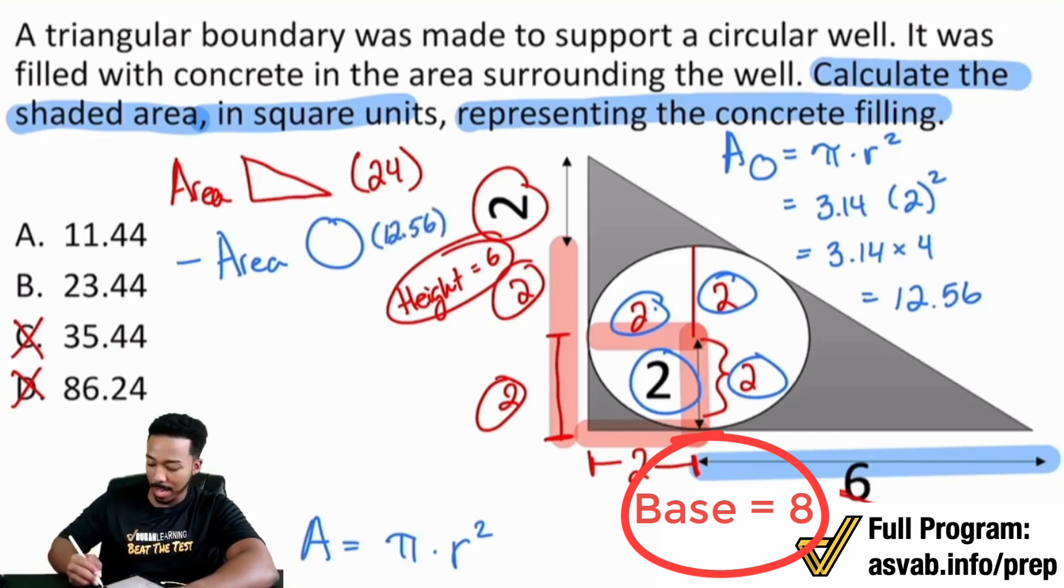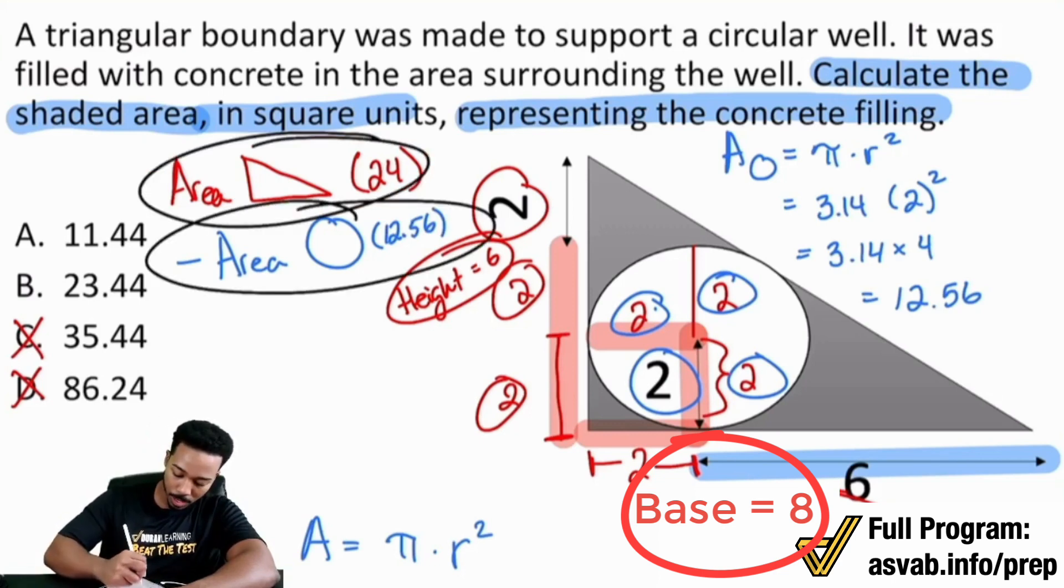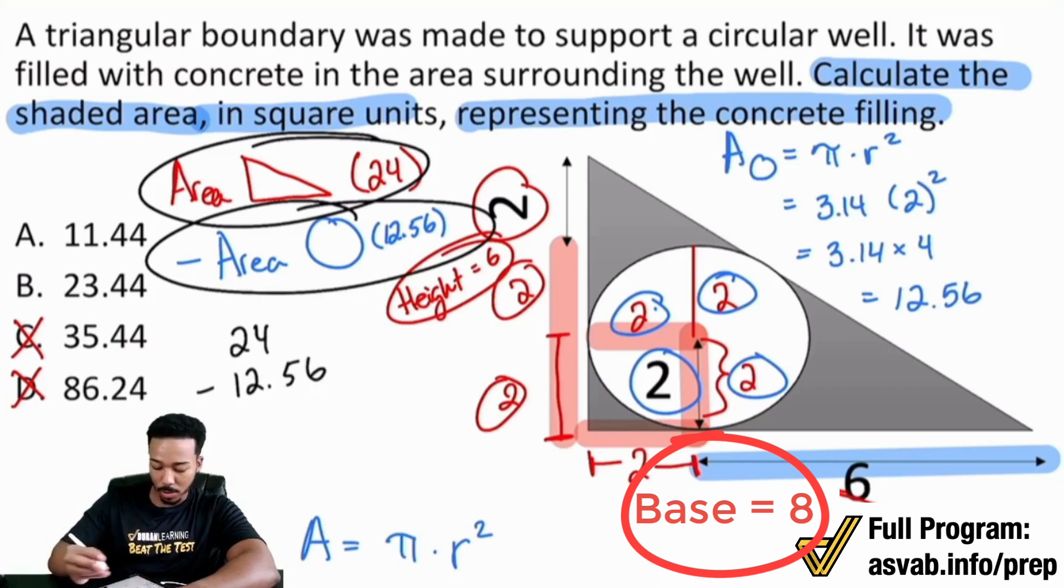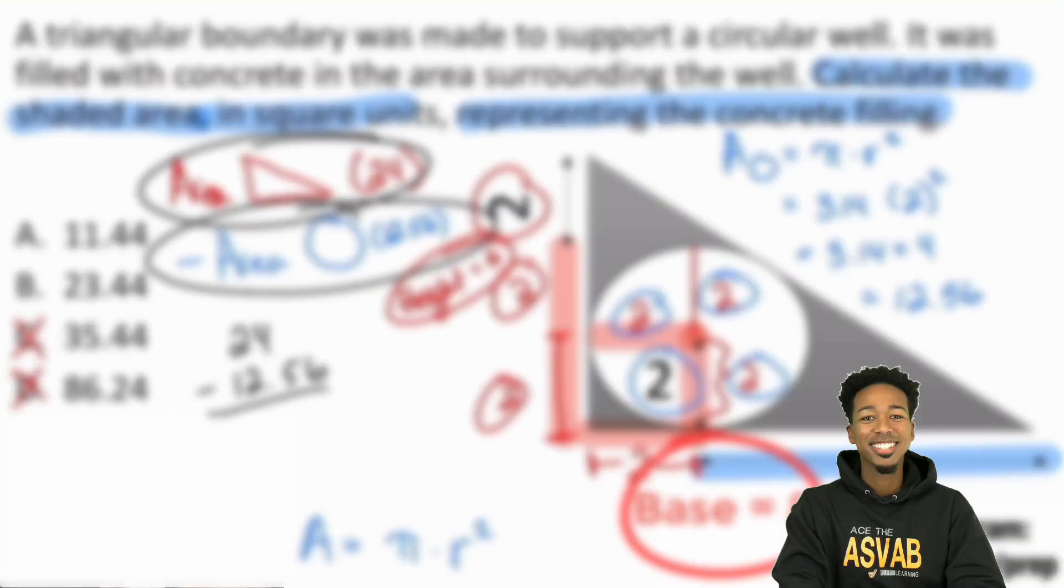And so at this time, you can absolutely be confident that you're going to take these areas away. And so you're going to do 24 minus 12.56. All right, cool. And so in doing so, you can say, hey, let me subtract the 12 first. Hey, hey, hey, really quick before we continue.